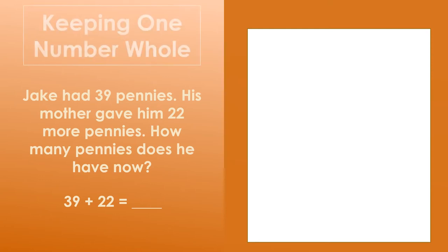What equation will we use to solve this problem? Correct! We could add 39 and 22 to find out how many total pennies Jake has now. To solve this problem, we are going to use a strategy called keeping one number whole.